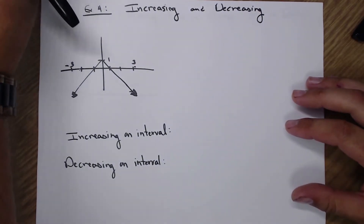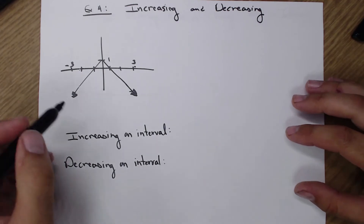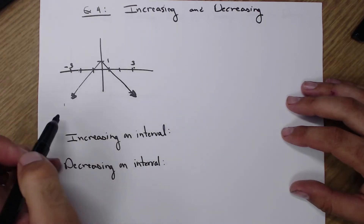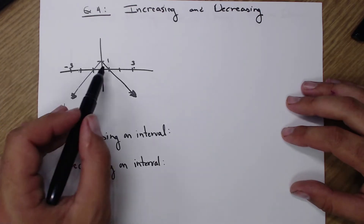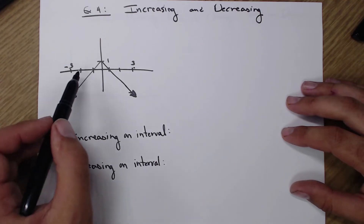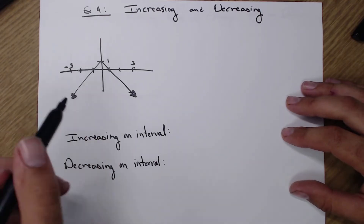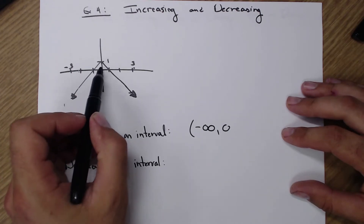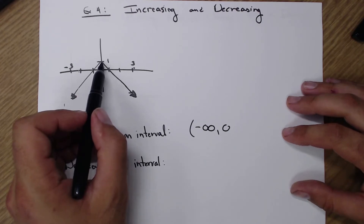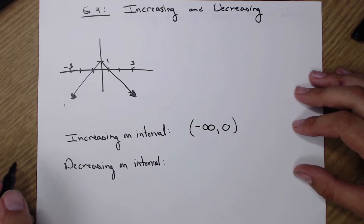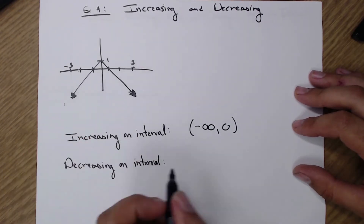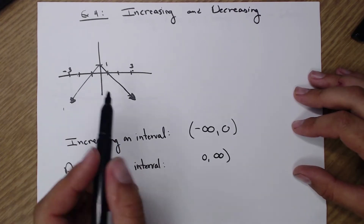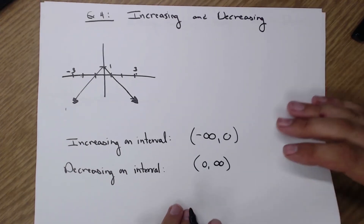Now: where are we increasing and where are we decreasing? I'm increasing on an interval from down here up to a peak. I don't care about the y values themselves — it's about where this happens on the x-axis. I'm increasing from negative infinity up to 0 — that's where I stop going up. At x equals 0 I'm turning around, neither going up nor down, so that's a soft parenthesis. And I'm decreasing from 0 to infinity, with parentheses at both ends since I can't be at infinity and I'm neither increasing nor decreasing at 0.